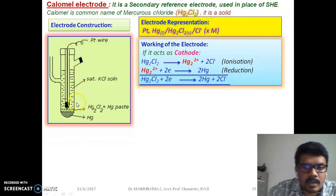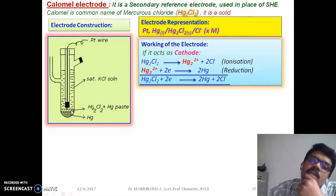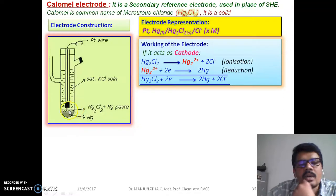Here you can expect mercury will come down and Cl- will enter into KCl. As a result, you can expect the decrease in thickness of mercury chloride and increase in the thickness of mercury and increase in the concentration of Cl- in KCl when it behaves as cathode.